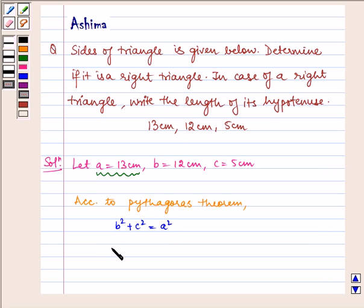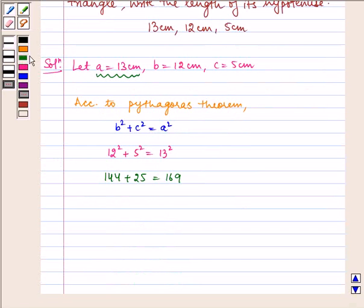That is 12 squared plus 5 squared equals 13 squared. That is 144 plus 25 equals 169. And here we can see that 169 equals 169.